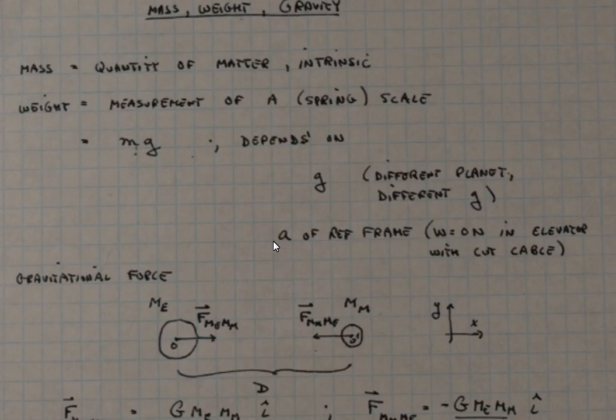The weight will also depend upon the acceleration of the reference frame that you're in. As we'll see, if I'm 100 kilograms and I am standing on a scale on terra firma, assuming g equals 10 meters per second squared, my weight is going to be m times g, which is 1000 newtons.